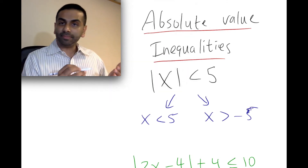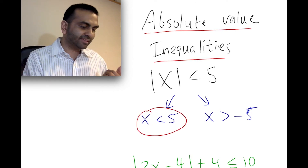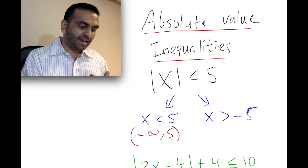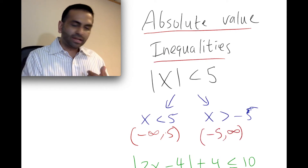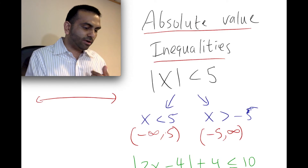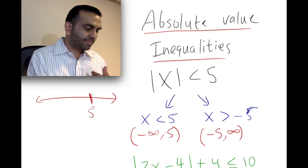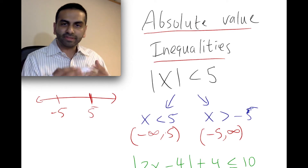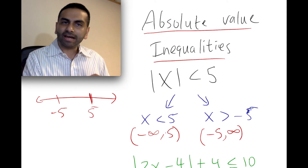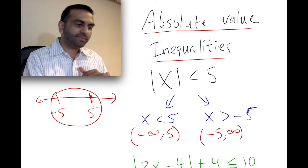We can represent this in interval notation. x less than five is negative infinity to five, and x greater than negative five is negative five to infinity. If you think about these two intervals and their overlap — negative infinity to five and negative five to infinity — the only overlap is to be between negative five and five.